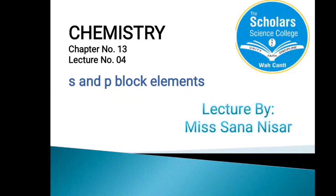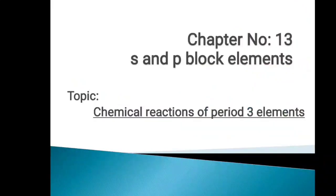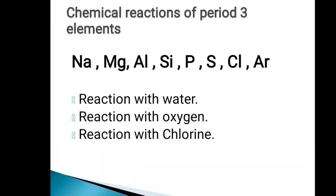In the previous lecture, we had discussed the physical properties of period three elements which includes electrical conductivity and melting and boiling point. In today's lecture, we will discuss the chemical reactions of period three elements. Chemical reactions include reaction of these elements with water, oxygen and chlorine. We will discuss each reaction one by one in detail.